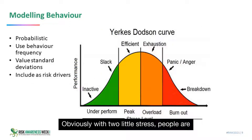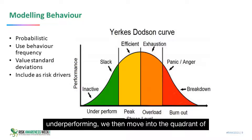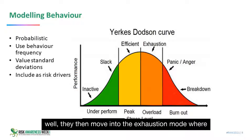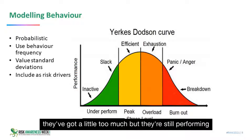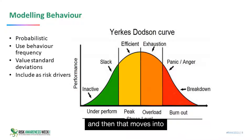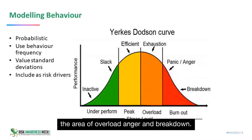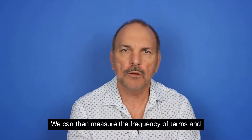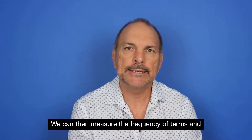With too little stress, people are underperforming. We then move into the quadrant where people have enough stress that they perform well. They then move into the exhaustion mode where they've got a little too much but are still performing, and then that moves into the area of overload, anger, and breakdown. We can then measure the frequency of terms and sentiments.